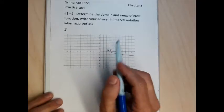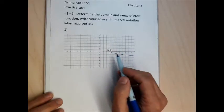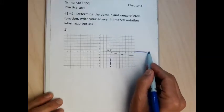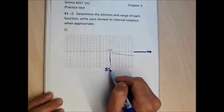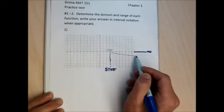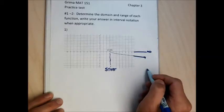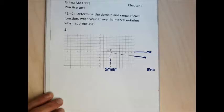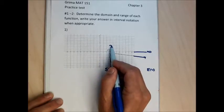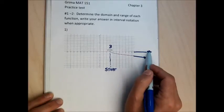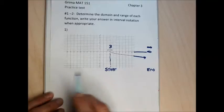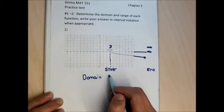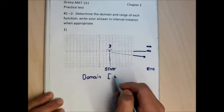The first problem wants me to find the domain and range and write it in interval notation. To do the domain, I need to know where the graph starts and stops in terms of left to right. This graph starts at the point (3, 0) and goes down and to the right forever. For the domain, I indicate the x-coordinate of the starting point and the x-coordinate at the end of the graph.